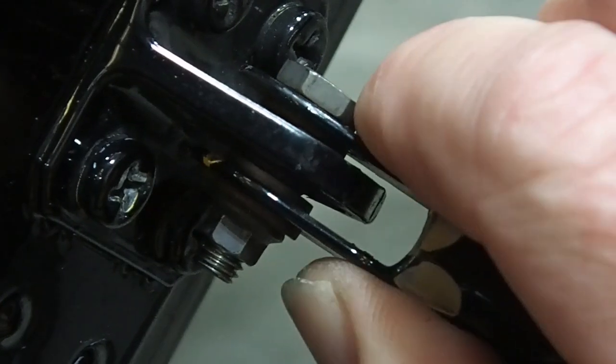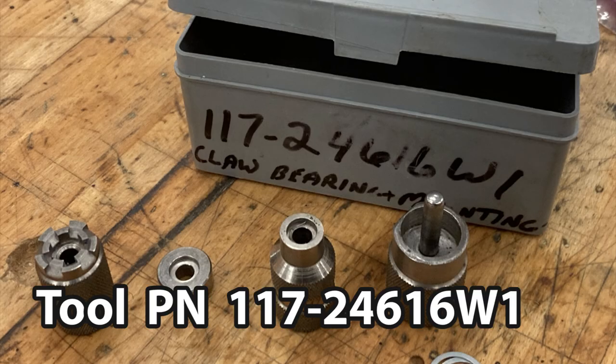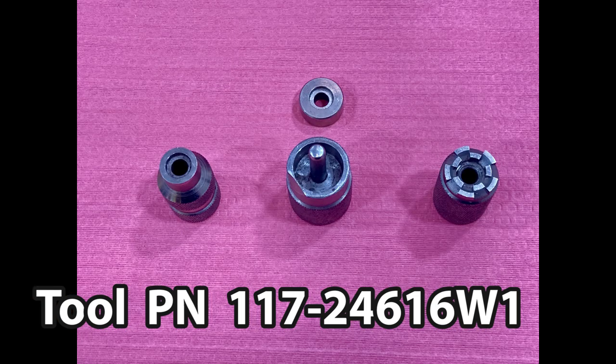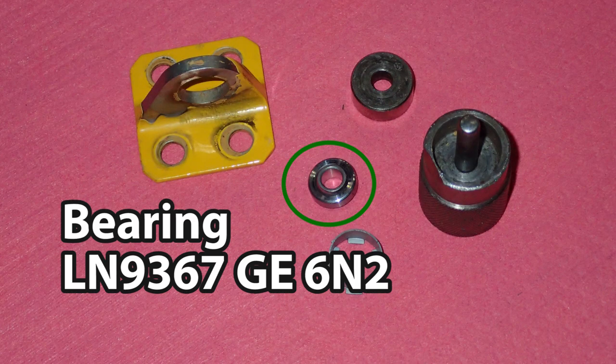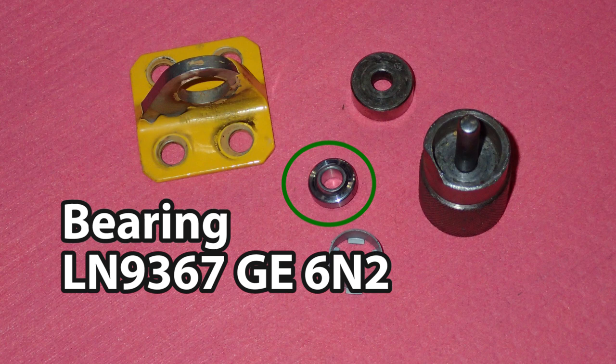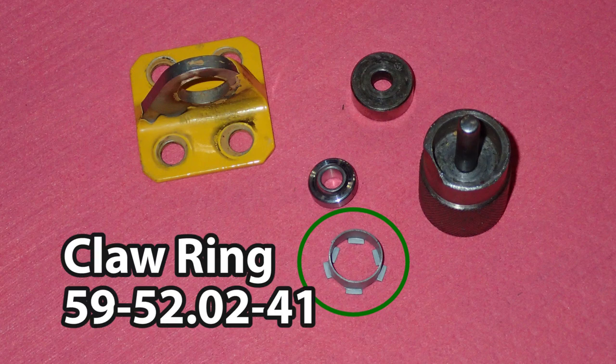What do we need to do this job? Well, there's a kit to push out this claw ring bearing and the part number for the kit is 117-24616 Whiskey 1. You're also going to need the bearing, part number LN9367GE6N2 and the claw ring 59-52 decimal 02-41.